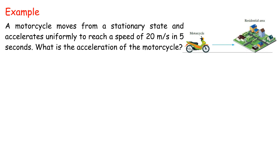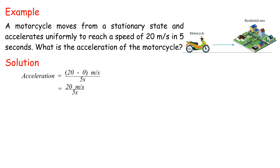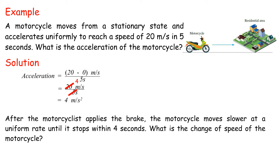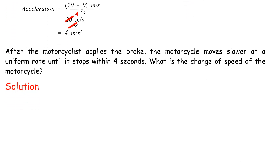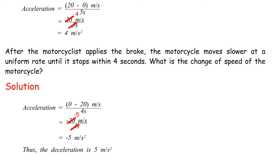Example: A motorcycle moves from a stationary state and accelerates uniformly to reach a speed of 20 meters per second in 5 seconds. What is the acceleration of the motorcycle? Solution: Acceleration equals 20 minus 0 meters per second over 5 seconds, equals 20 meters per second over 5 seconds, equals 4 meters per second squared. After the motorcyclist applies the brake, the motorcycle slows at a uniform rate until it stops within 4 seconds. Acceleration equals 0 minus 20 meters per second over 4 seconds, equals negative 5 meters per second squared. Thus, the deceleration is 5 meters per second squared.